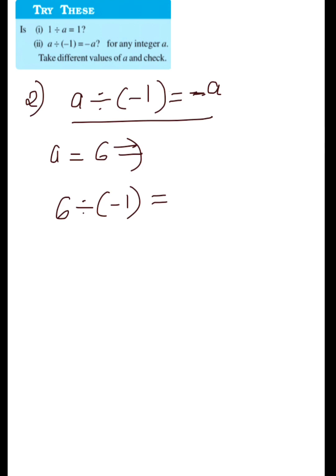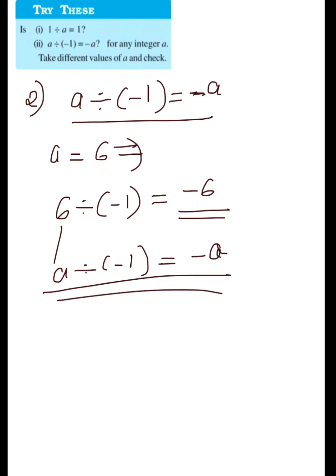6 divided by minus 1: you divide and put the negative sign. So 6 divided by 1 is 6, and putting the negative sign gives minus 6. So A divided by minus 1 equals minus A — this is correct.